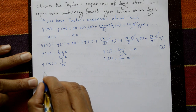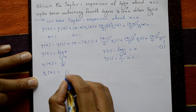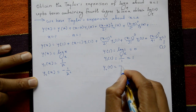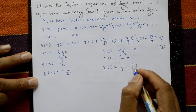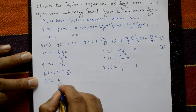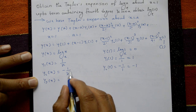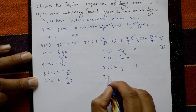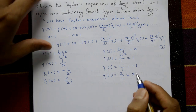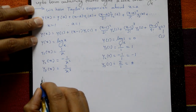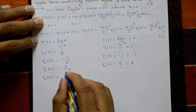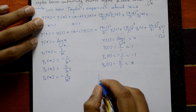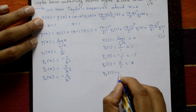Differentiate again: y₂(x) = −1/x², so y₂(1) = −1. Differentiate once more: y₃(x) = 2/x³, so y₃(1) = 2. Differentiate again: y₄(x) = −6/x⁴, so y₄(1) = −6.